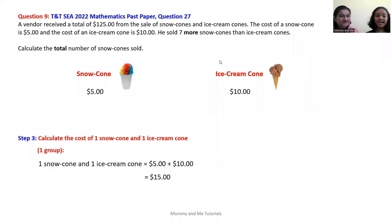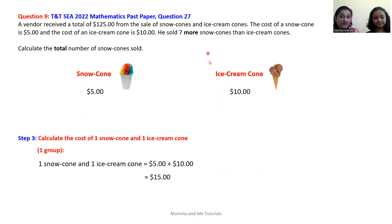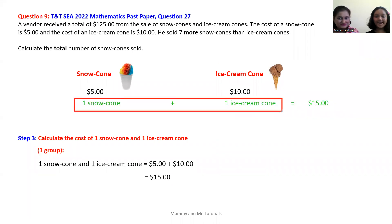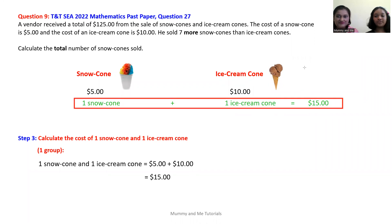Step three: calculate the cost of one snow cone and one ice cream cone. One snow cone and one ice cream cone represent one group. One snow cone costs $5, while one ice cream cone costs $10. All together, the cost of one group equals $15.